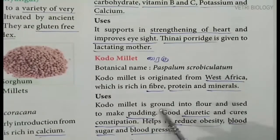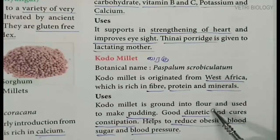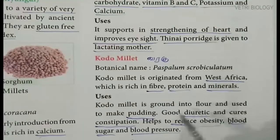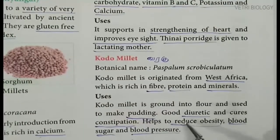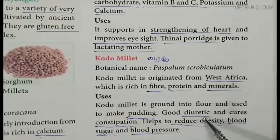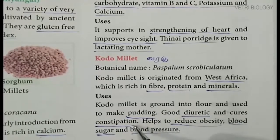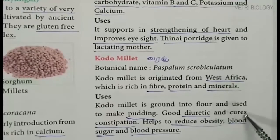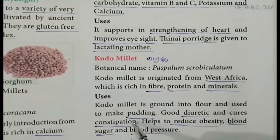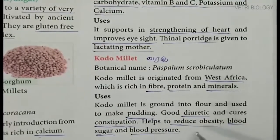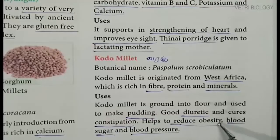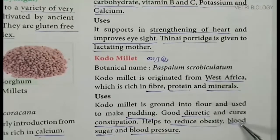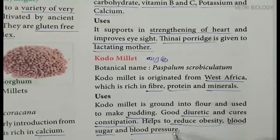Kodo millet, called varagu in Tamil, has botanical name Paspalum scrobiculatum. It is rich in fiber, protein and minerals. Kodo millet is ground into flour and used to make pudding. It is a good diuretic, cures constipation, helps to reduce obesity, and controls blood sugar and blood pressure.